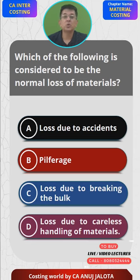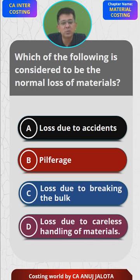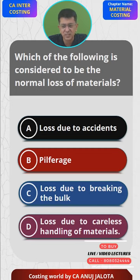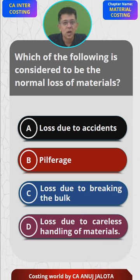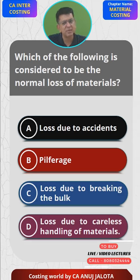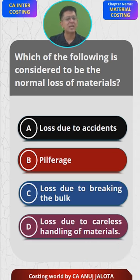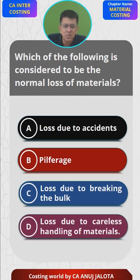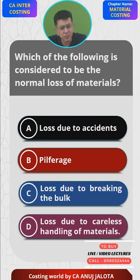Loss due to accidents — you only come to know when the accident actually happens. For example, a truck carrying goods meets with an accident; you wouldn't know in advance that this would happen. Pilferage, which is theft, is also an abnormal thing. These are not things you can reliably predict — once they happen, you come to know about them. So both A and B are generally considered abnormal losses.